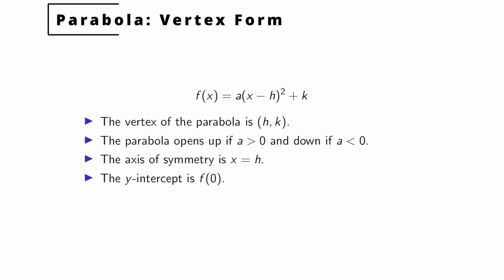Hello and welcome to another Orange Coast College mathematics video. In this video, we're going to learn how to graph a parabola when it's given in vertex form. Vertex form is when your quadratic function — f of x or y — equals a constant a, times x minus h, quantity squared, plus k. This is called vertex form because just by looking at the equation, you can see the vertex. The vertex is (h, k).